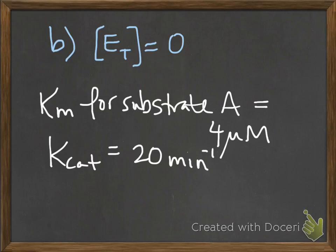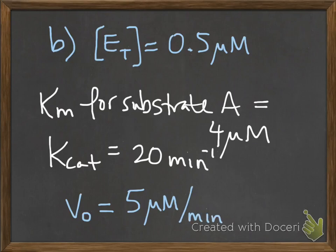It tells you, in another experiment, you used a total enzyme concentration of 0.5 micromolar. You measured that, you put it into your test tube, that's how much enzyme you put in. You measured the initial velocity, and it was 5 micromolar per minute. So the question here is now, how much substrate did you put in to get this velocity with that amount of enzyme?